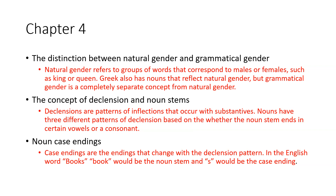The concept of declension and noun stems: declensions are patterns of inflections that occur with substantives. Nouns have three different patterns of declension based on whether the noun stem ends in certain vowels or a consonant. Case endings are the endings that change within a declension pattern — in the English word 'books,' 'book' would be the noun stem and 's' would be the case ending, just as an example to help illustrate.